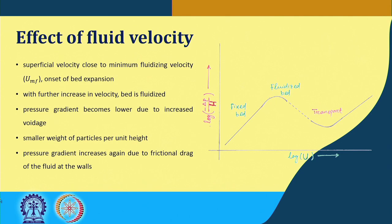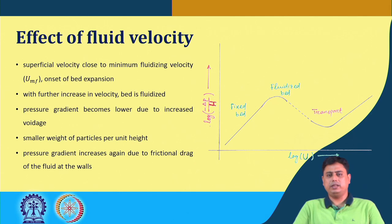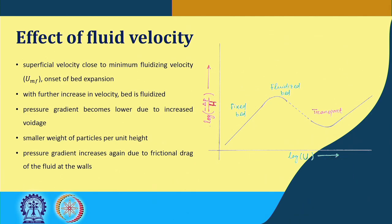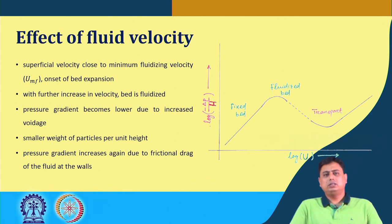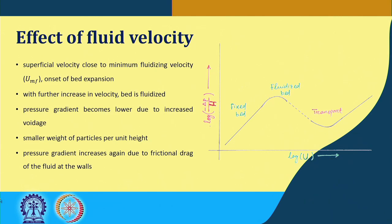When we have sufficient fluid superficial velocity reaching the minimum fluidization velocity — designated U_MF, where MF stands for minimum fluidization — the onset of bed expansion occurs. The bed starts to expand and continues until the maximum voidage possible for that kind of packing is reached. With further increase in velocity, the bed becomes fully fluidized.